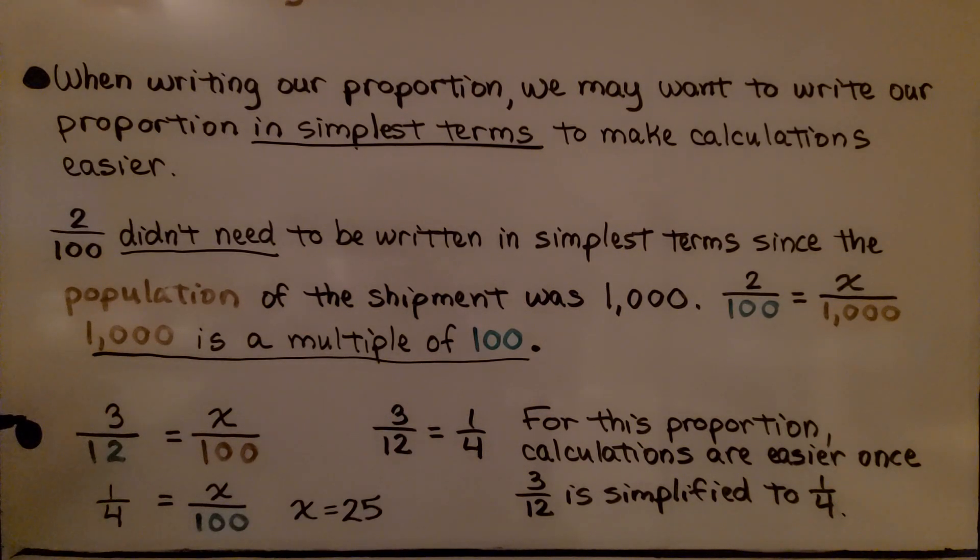Now look at this proportion. We have 3/12 equals x/100. For this proportion, calculations are easier once 3/12 is simplified to 1/4. We have 1/4 equals x/100. When we know 25/100 is 1/4, we know x equals 25. In this proportion, it was easier to simplify first.